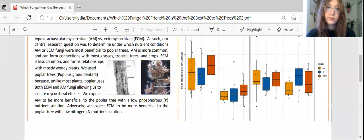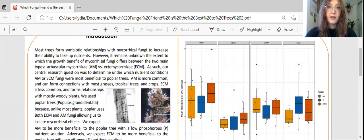Most trees form symbiotic relationships with fungi. In these relationships, the fungi help the plants absorb nutrients and the plants give the fungi some of their sugar.